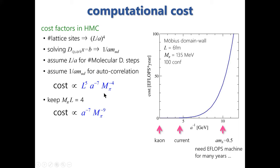This figure shows that the HMC simulation cost actually increases towards the continuum limit. Using my favorite domain wall fermions on a 6^4 box at physical bottom mass to accumulate 100 configurations, the currently available lattice cutoff is up to 4–5 GeV. The cost for kaon physics is not so high, but simulation cost definitely increases if we take the lattice cutoff twice larger than the physical bottom mass. With currently available computational resources, it is difficult to simulate QCD with physical bottom mass directly.